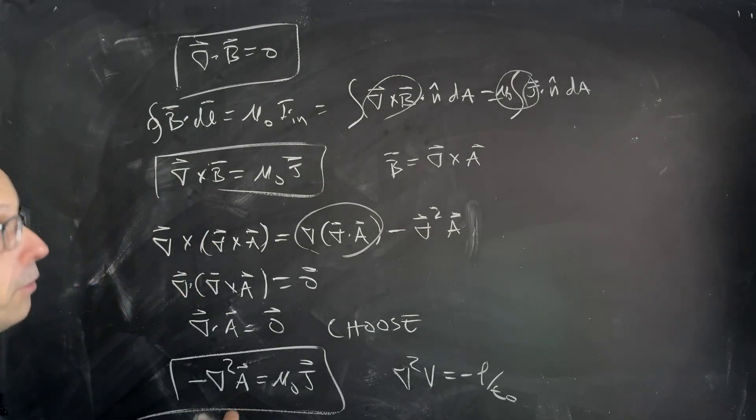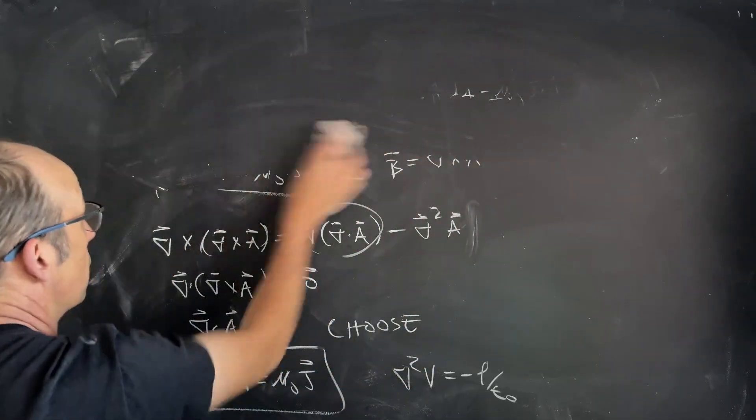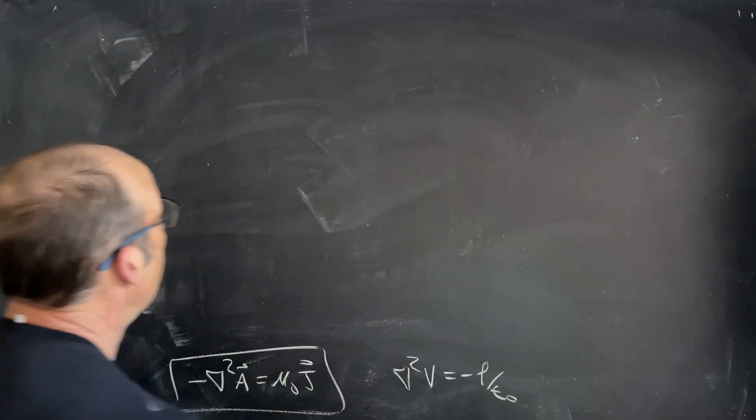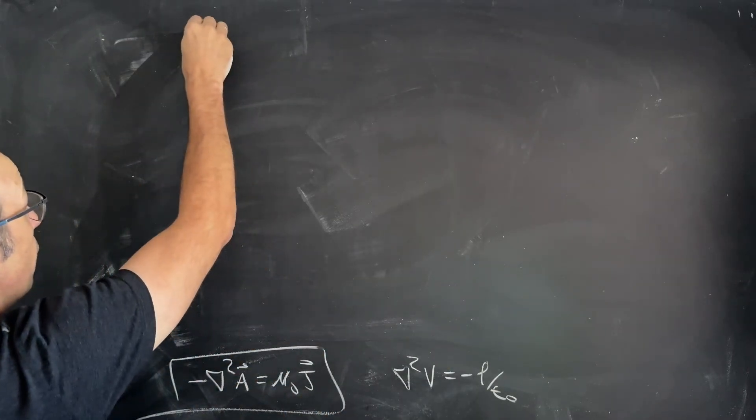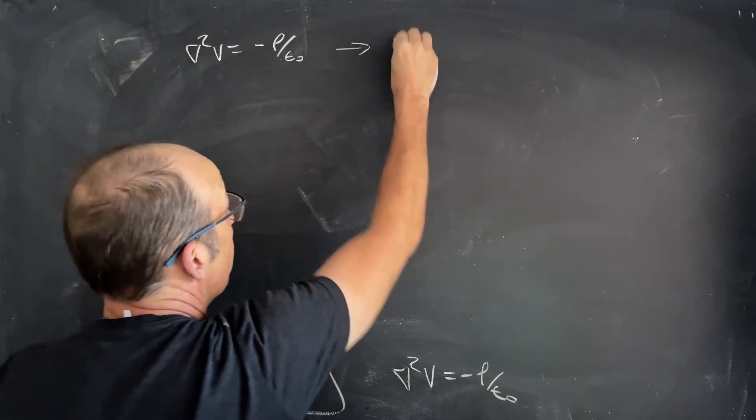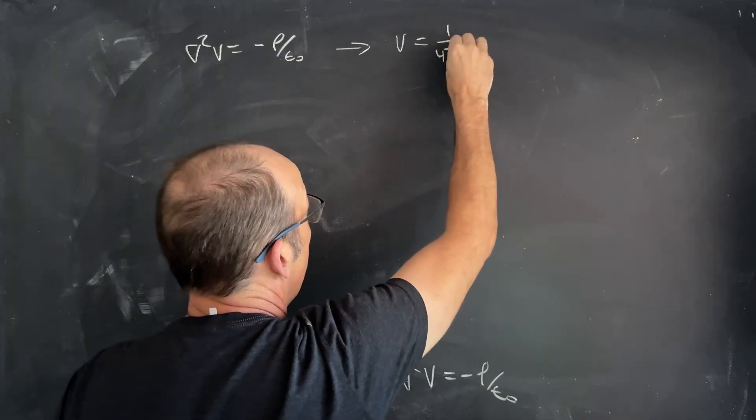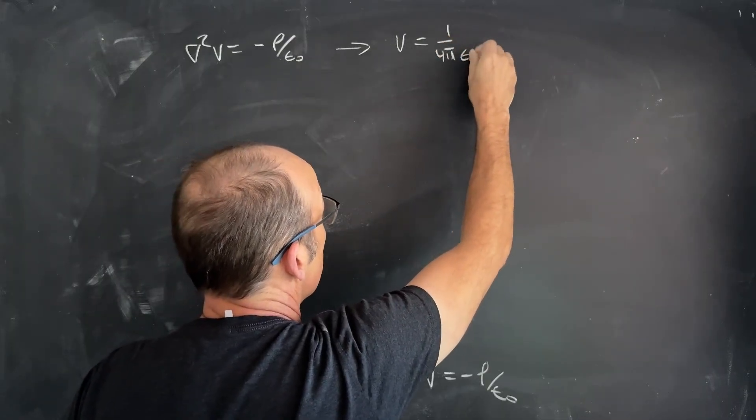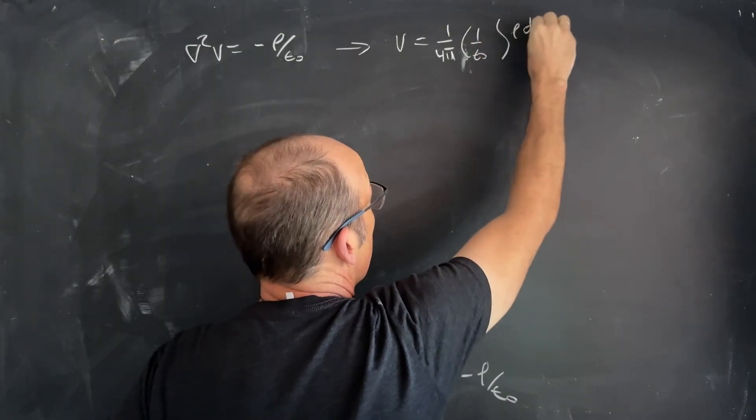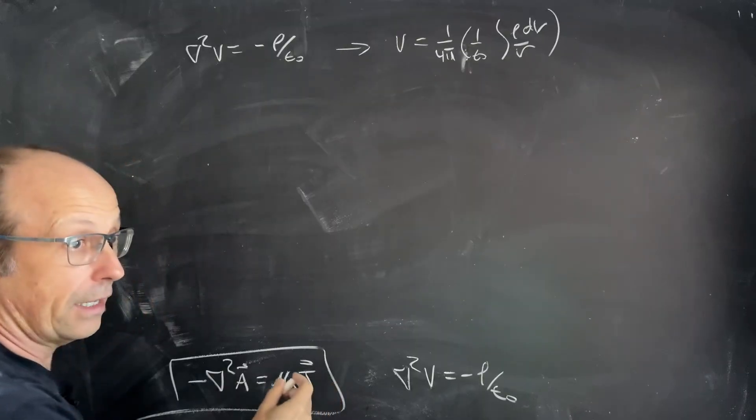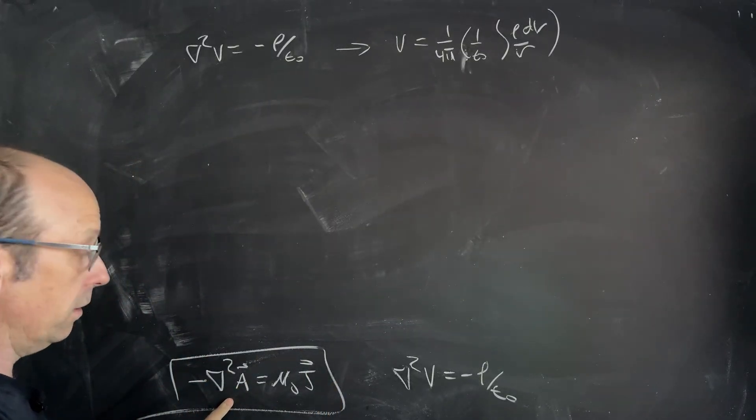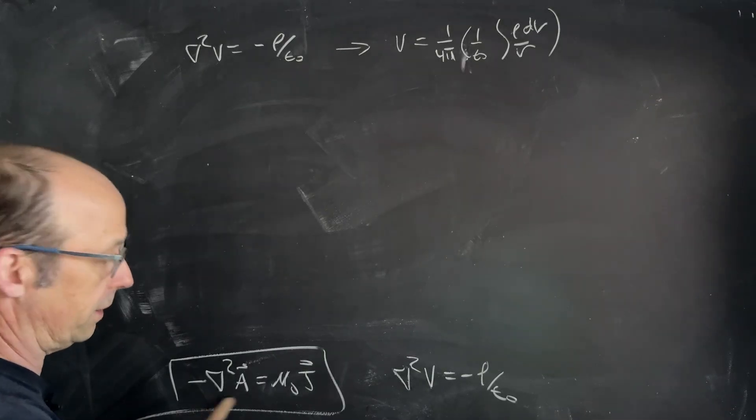And we're going to call A the vector potential. So, let's go over here. Remember, Del squared V, negative rho over epsilon naught. And that gave me V is 1 over 4 pi epsilon naught. Let's put 1 over 4 pi, 1 over epsilon naught, the integral of rho DV over R. And that was how I defined potential. This is the vector Laplacian, the vector Poisson equation, because it has not equal to zero.